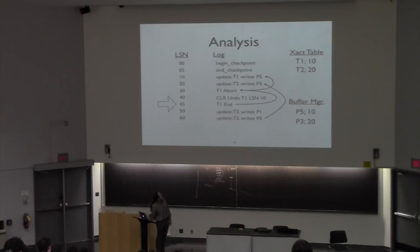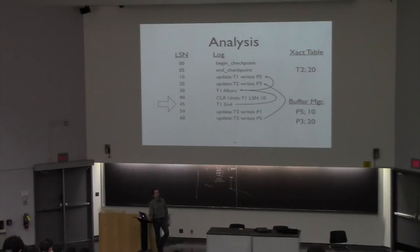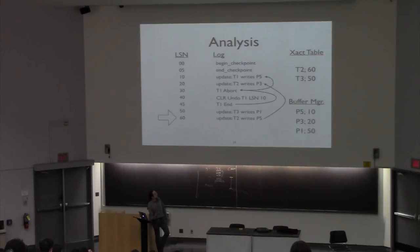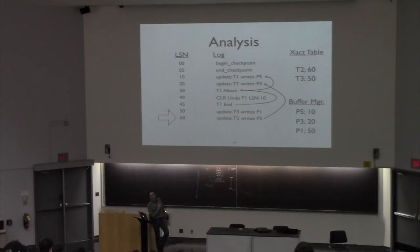Starting with analysis: beginning from the last checkpoint, which tells us transactions one and two are active. We replay the log updating both the buffer manager and the transaction table. T1 writes P5 — saved in the transaction table. T2 writes P3 — recorded for T2. We also update the buffer manager: page five was updated by T1, page three was updated by T2.